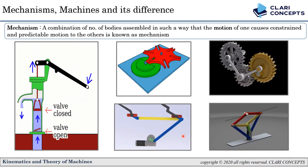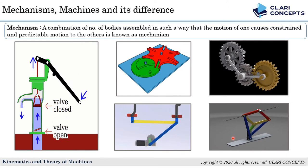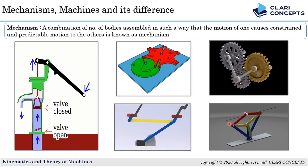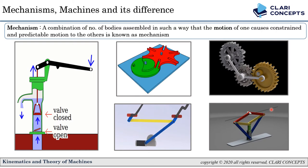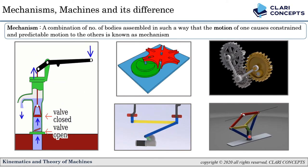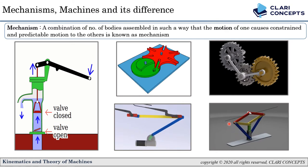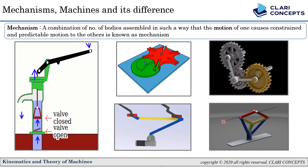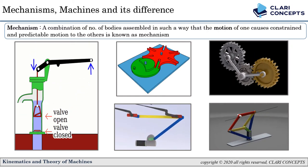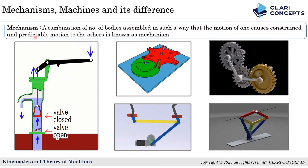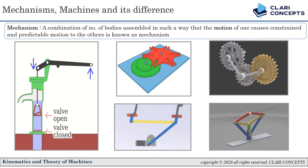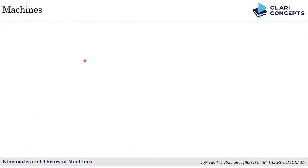The last example is a straight-line mechanism — again, motion transmission from one link to another is taking place. So whenever there is motion transmission from one link to another and that transmitted output motion is predictable, we will call that a Mechanism.